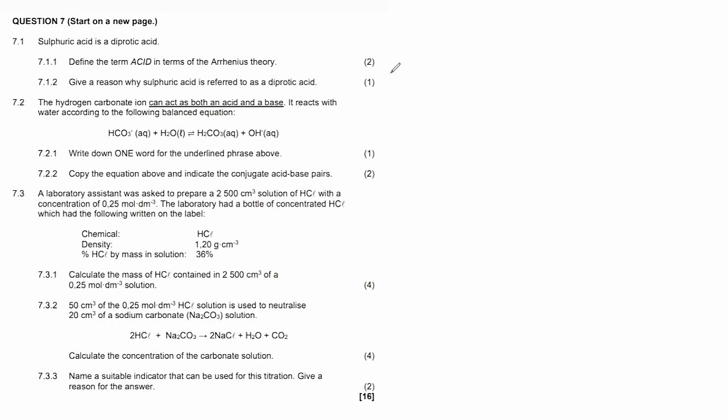We know that the formulas we would have to use if we are given concentration is either c = n/V or c = m/(M×V). Looking at this, we are trying to calculate the mass, so the most suitable formula to use is c = m/(M×V).